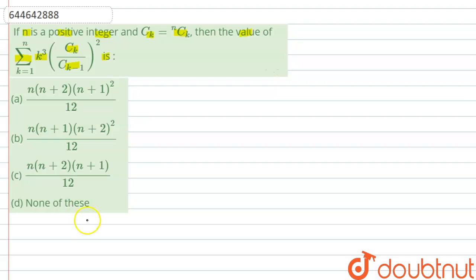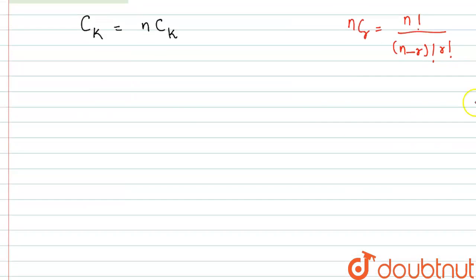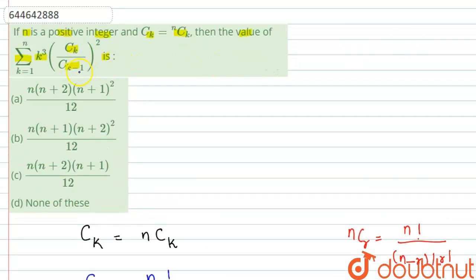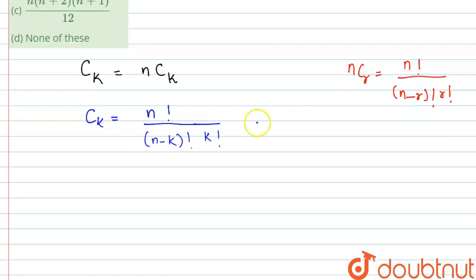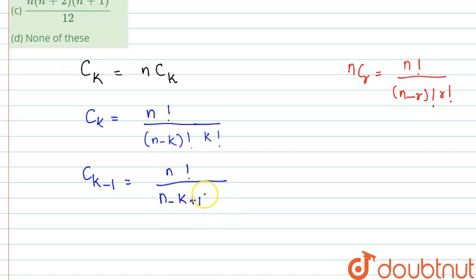Since Ck = nCk, we use the formula nCr = n! / ((n-r)! · r!). So Ck = n! / ((n-k)! · k!). In the question we also have the Ck-1 term. Similarly, Ck-1 is obtained by replacing k with k-1, giving Ck-1 = n! / ((n-k+1)! · (k-1)!).